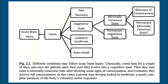The main disorder of consciousness we'll discuss is the coma. An acute brain injury — usually some form of trauma or a stroke — can cause a coma, which leads to different scenarios. The most common path is two to three days in a coma, moving into a vegetative state, then into a minimally conscious state, then slow recovery. Other outcomes include quick recovery, brain death, or very rarely, locked-in syndrome — a form of complete paralysis.